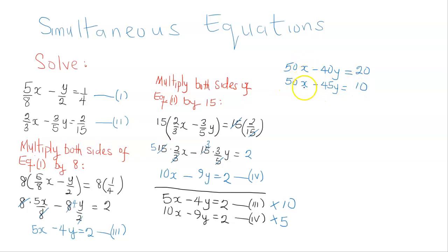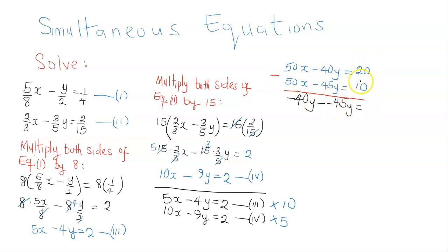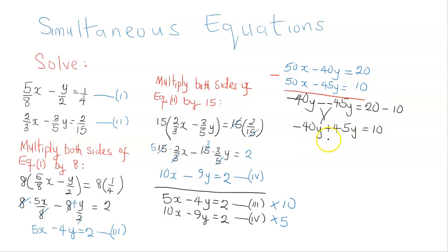The coefficients of x are now equal, so we subtract the second from the first. 50x minus 50x cancels. We're left with minus 40y minus (minus 45y), which equals 20 minus 10. Two negatives combine to give a positive, so this becomes minus 40y plus 45y equals 10, which is 5y equals 10. Dividing both sides by 5, y equals 2.